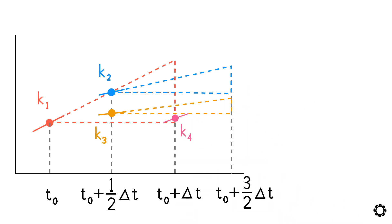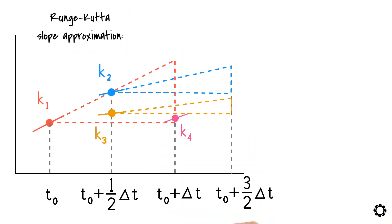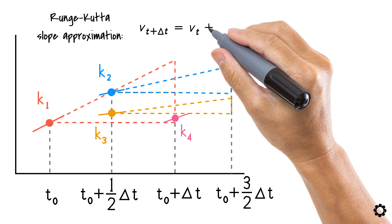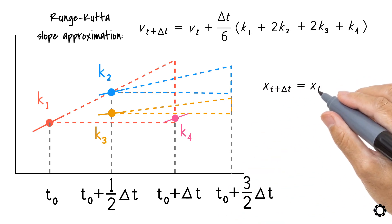Now that we have found our four needed slopes, we can perform the Runge-Kutta slope approximation. We can then apply this to the same equation as in the case of Euler's method to obtain the system's current position.